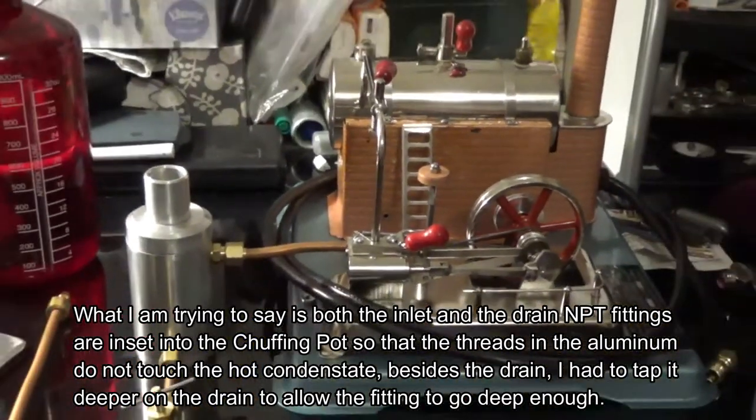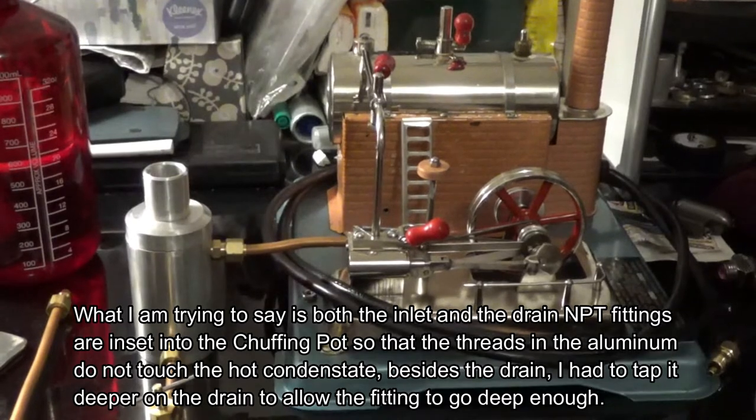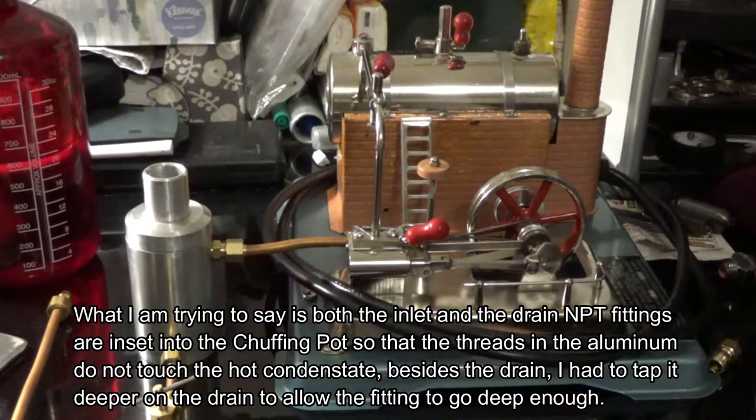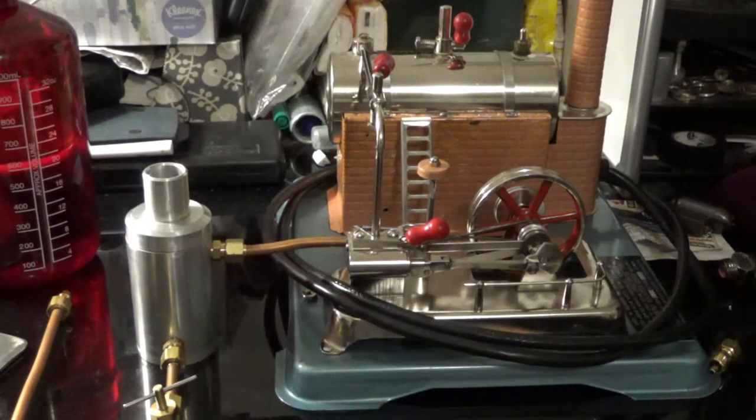This is a Jensen model 25. These small steam engines do produce quite a bit of condensate because they use wet steam and they're not the most efficient type steam engine.